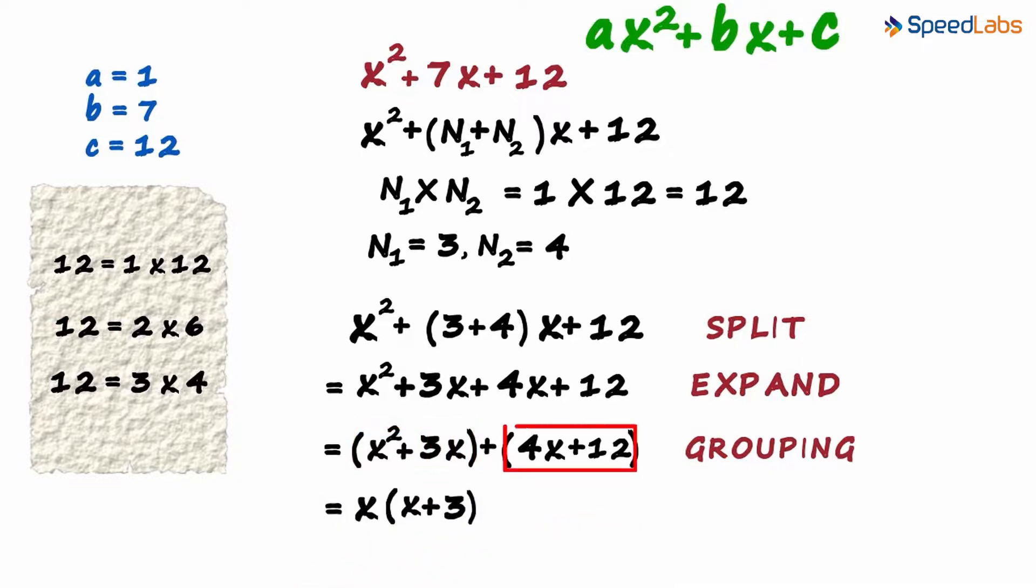In the second group, the number 4 is common to both the terms and can be written as 4 multiplied by x plus 3. As x plus 3 is common to both the terms, the expression reduces to x plus 3 multiplied by x plus 4. This is the factorized form of the polynomial.